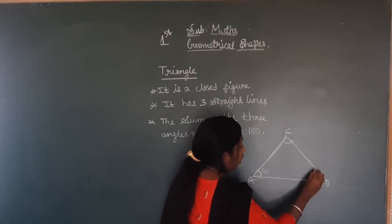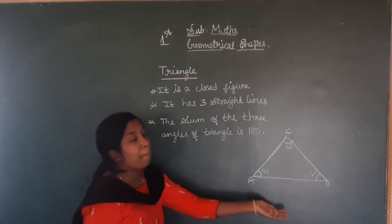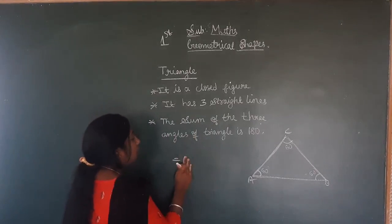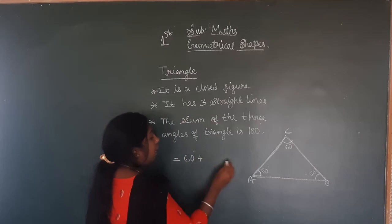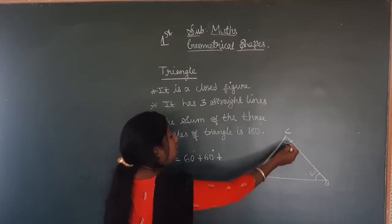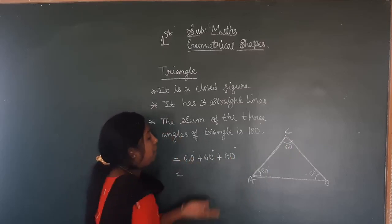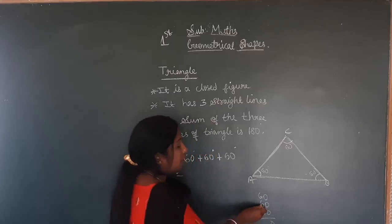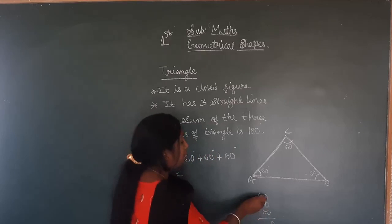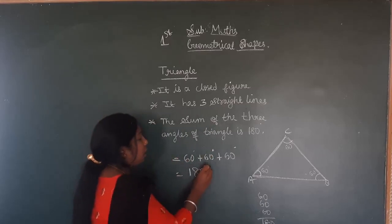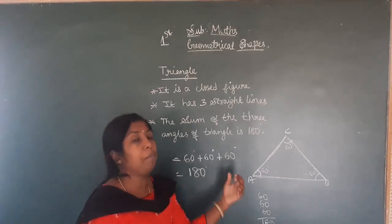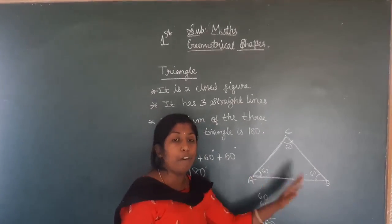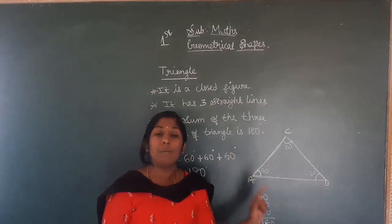So the sum — while adding these three angles: 60 plus 60 plus 60. We get 180 degrees. So triangle means three sides, it is a closed figure, and the sum of angles in the triangle is 180 degrees.